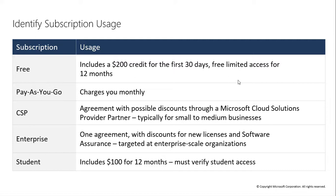Enterprise Account will be billed upfront. For example, if you are going to access some resources like instances for one or two years, or you are going to use huge services for a long-term period, you can choose an Enterprise Account. You have to pay upfront money, but the discount will be compared — around 72%. This is useful for long-term access and long-term projects.